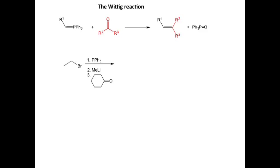Going through the mechanism: the first thing to remember is that phosphorus is right below nitrogen on the periodic table, so it has a lone pair. In step one, we're simply going to do an SN2-type reaction. The lone pair on the phosphorus will attack the carbon, we'll break the carbon-bromine bond, and that will generate our first structure.